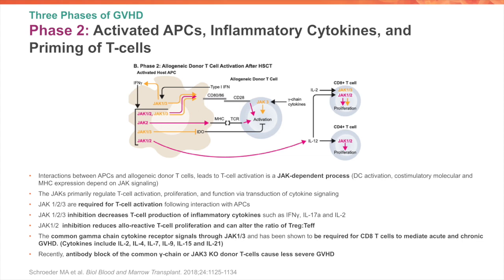JAK signaling regulates T cell activation, proliferation, and function, primarily through transducing cytokine signals required for T cell activation, signaling through JAK1, JAK2, and JAK3. Studies have shown that inhibition of JAK1, JAK2, or JAK3 decreases T cell production of inflammatory cytokines such as interferon gamma, IL-17, and IL-2. JAK1 and JAK2 inhibition reduces alloreactive T cell proliferation and can alter the ratio of regulatory T cells to T-effector cells. Recent evidence also suggests that the common gamma-chain cytokine receptor, which signals through JAK1 and JAK3, is required for CD8 T cells to mediate acute and chronic graft versus host disease, and antibodies blocking this common gamma chain or knockout of JAK3 in donor T cells result in less severe graft versus host disease.